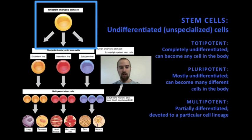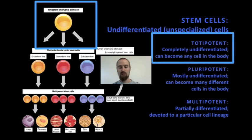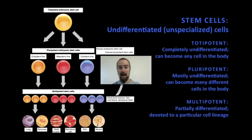Totipotent stem cells are the most flexible. They have the potential to become absolutely any kind of cell in the body because they are completely undifferentiated. Zygotes are totipotent cells, as are all the cells in an embryo up until that embryo reaches the 16-cell stage. After this stage, the cells in that embryo begin to differentiate and go down different roads of development. The outermost cells are destined to become the placenta, a structure that nurtures the developing embryo by integrating itself with the mother's tissues, and that's all these cells are ever capable of being from here on out.